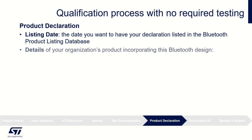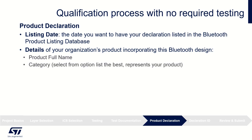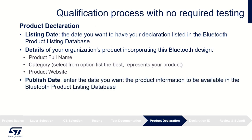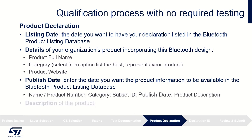The listing date must not be later than 90 days after the date you submit your project through Launch Studio. Details of your organization's product incorporating this Bluetooth design include: product full name, category — enter the category which best represents your product from the list of options — product website URL, and publish date — enter the date you want the product information to be available in the Bluetooth product listing database, no later than 90 days after submission. Also provide product number, category, subset ID if applicable, and product description.